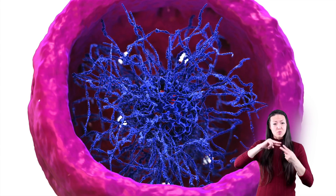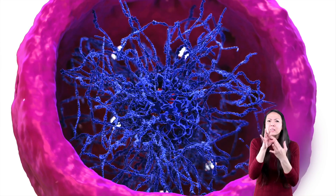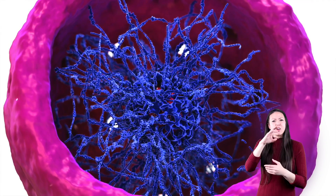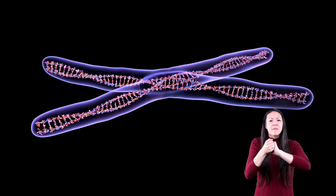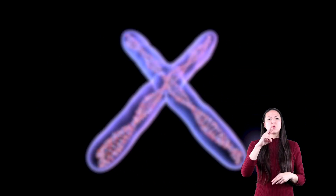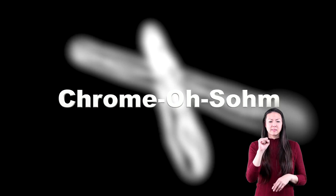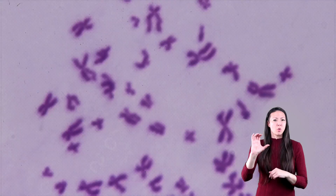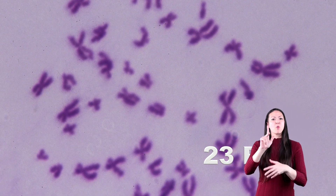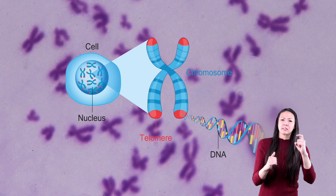DNA strands are so long that they must be packaged specially so they can fit into the nucleus of every cell. They are wound up tight and form structures called chromosomes.